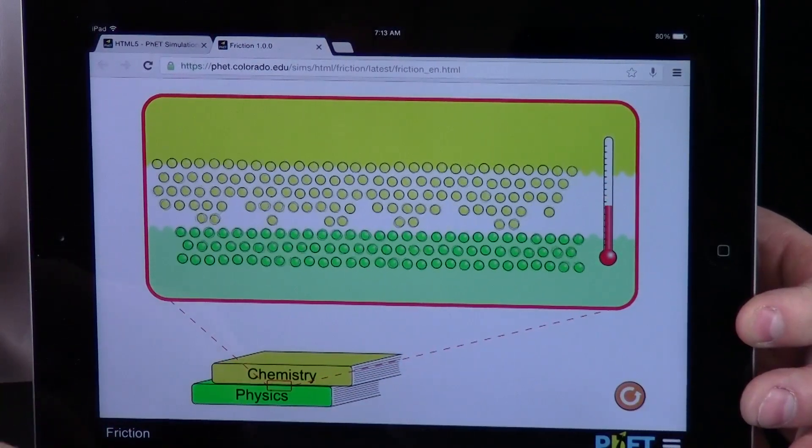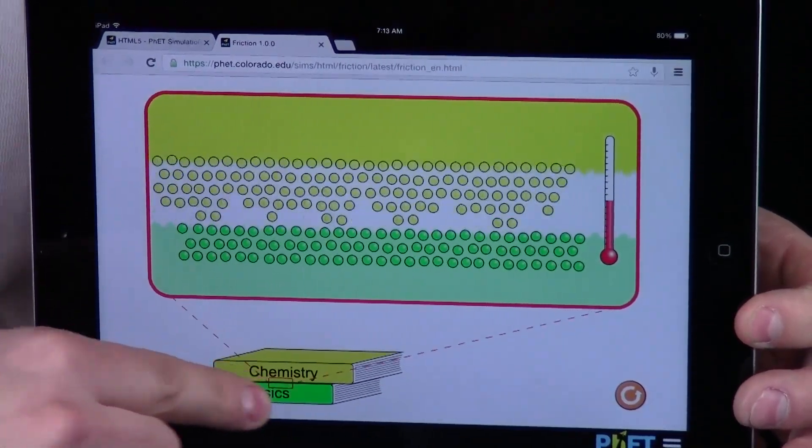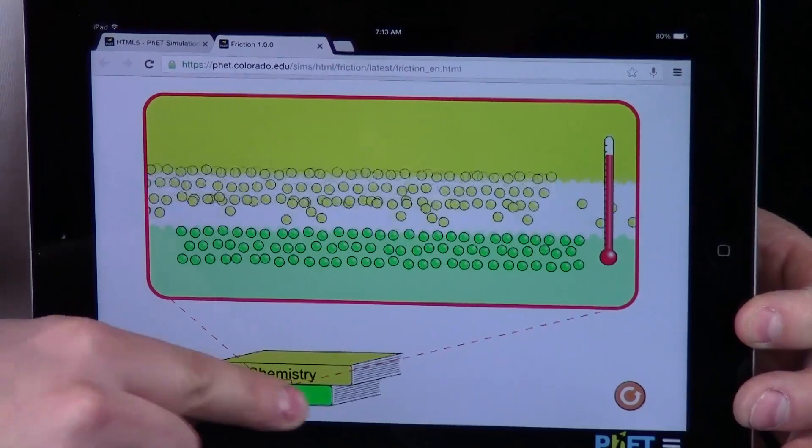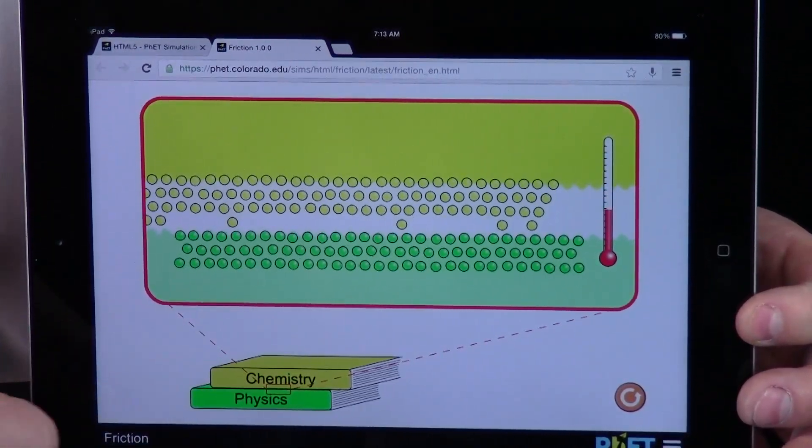And when I stop, it goes down because the particles slow down and they are not moving as fast. So, let's rub them together again like I am rubbing my hands together. The particles speed up. Temperature goes up. Stop.